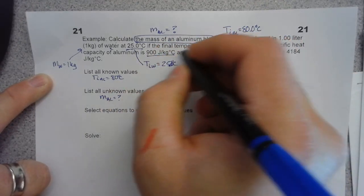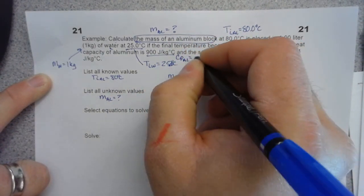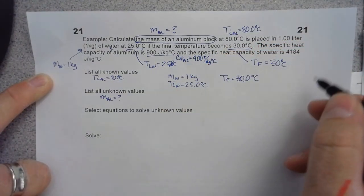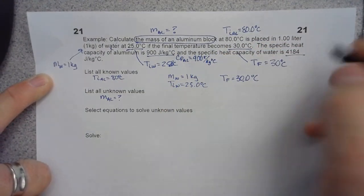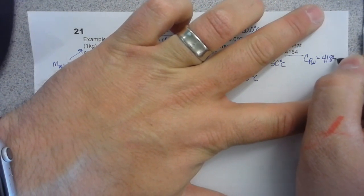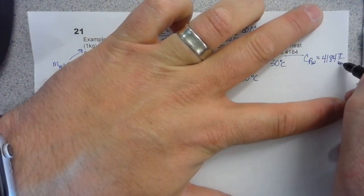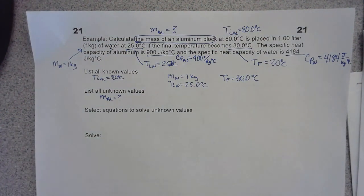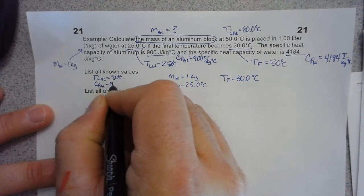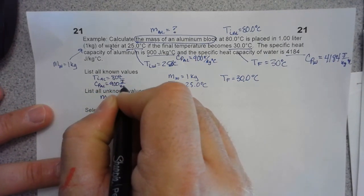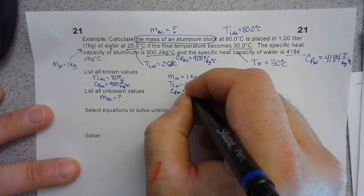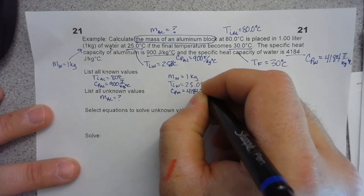The specific heat capacity of aluminum is 900 joules per kilogram degrees Celsius, and the specific heat capacity of water is 4184 joules per kilogram degrees Celsius. So cp of aluminum is 900, and cp of water is 4184 J/kg°C.